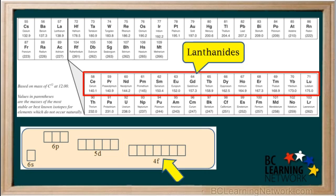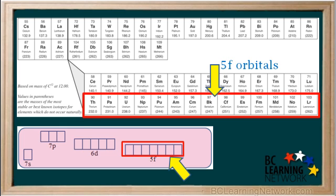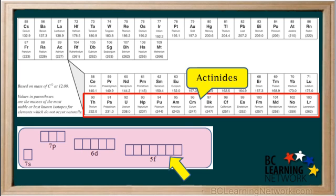These are called the lanthanide group of elements, and the 14 elements which fill up the 5f orbitals are in this row, and they're called the actinides.